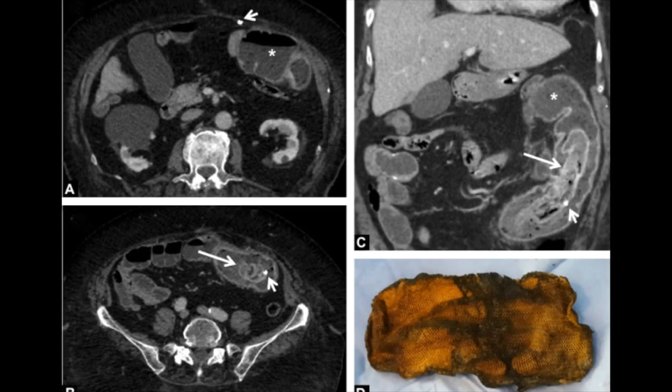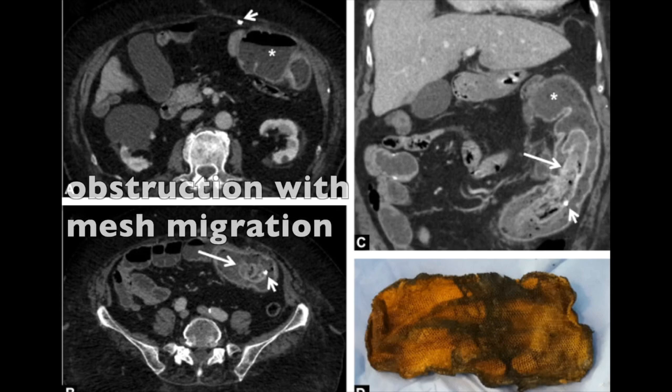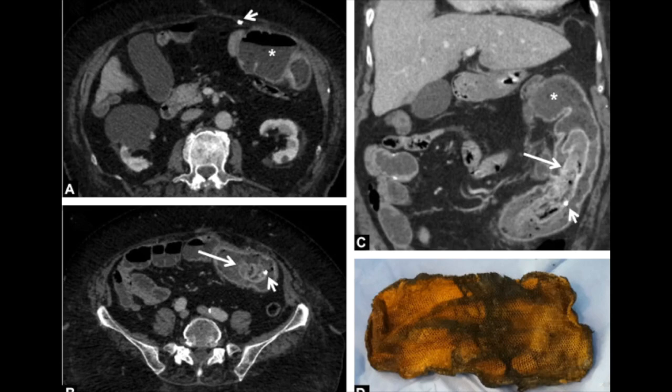Here's another small bowel obstruction. In this case, there was migration of the mesh. This patient had a prior history of colectomy and presented with abdominal pain and vomiting. Again we see dilated small bowel loops, but this time there is an intraluminal foreign body indicated by the long arrow. This foreign body was hyper-attenuating and contained a tack seen by the short arrow. Gross pathology confirmed a parietal mesh that had migrated into the small bowel.